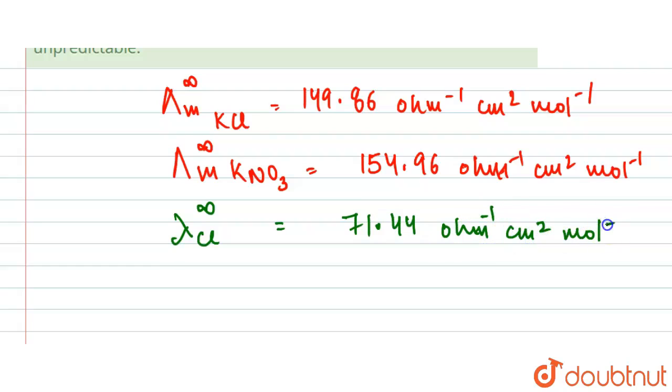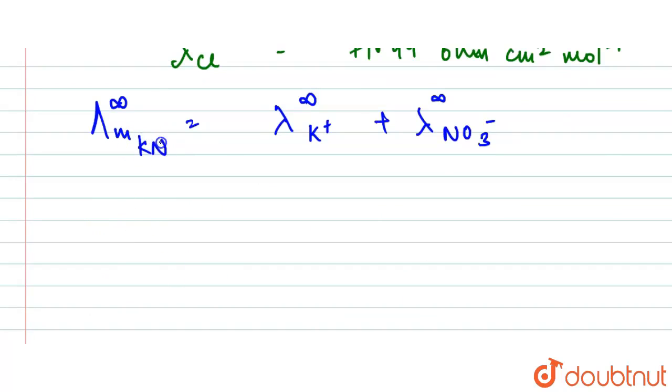So now here what we will have is two equations. This here will be equal to K⁺ plus NO₃⁻. The next will be for KNO₃, and this is because the molar conductivity is equal to the sum of cation and anion. Here it will be K⁺ plus Cl⁻.